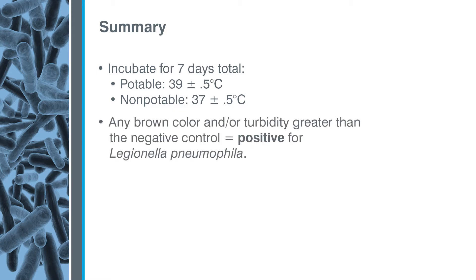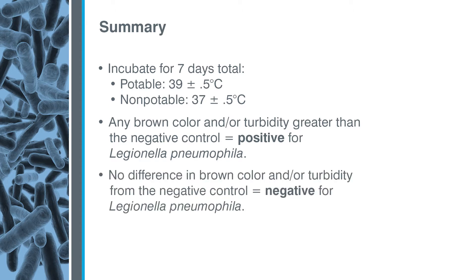Samples with any brown color and or turbidity greater than the negative control are positive for Legionella pneumophila. Samples with no difference in brown color and or turbidity from the negative control are negative for Legionella pneumophila. Positives before 7 days and negatives after 7 days are also valid. Always follow these testing guidelines.